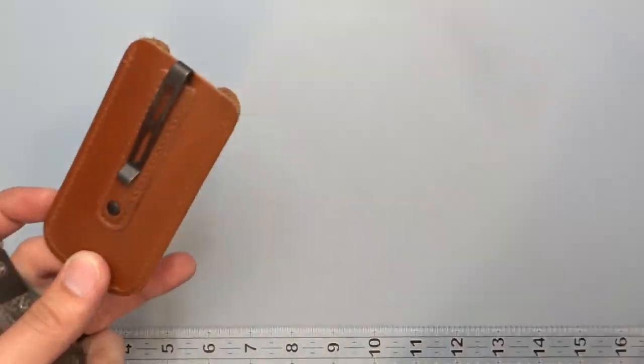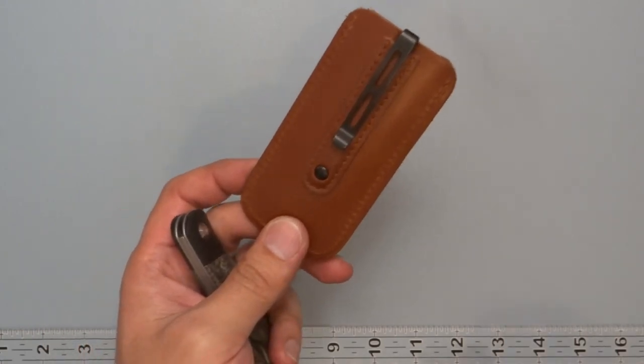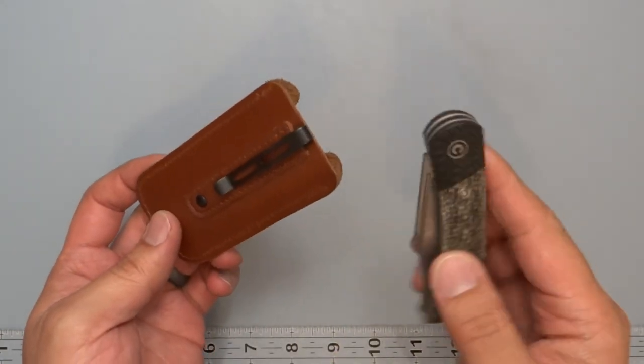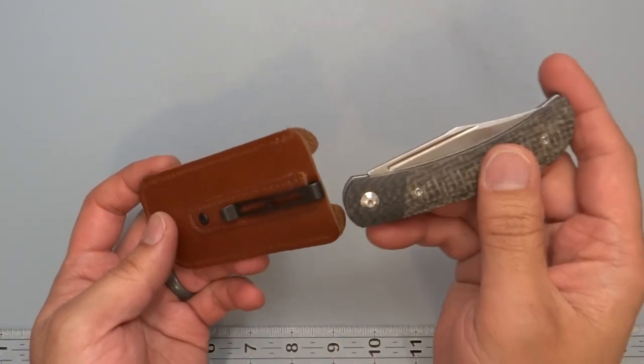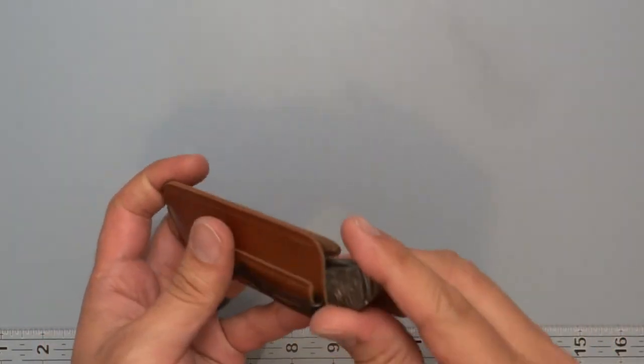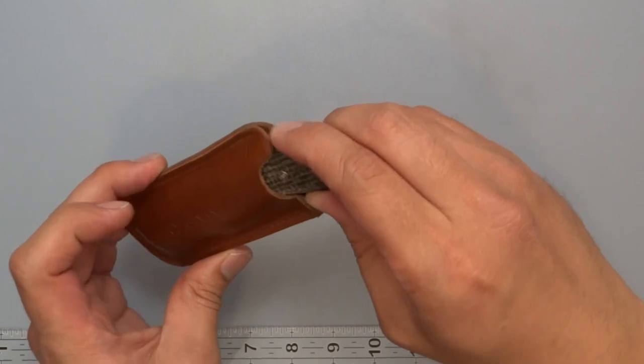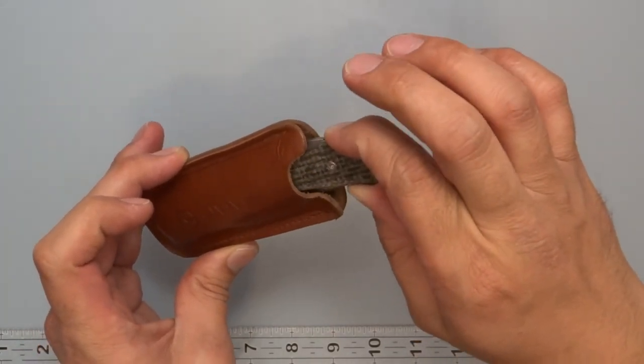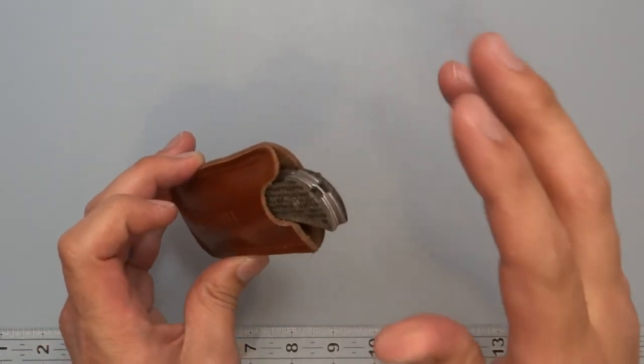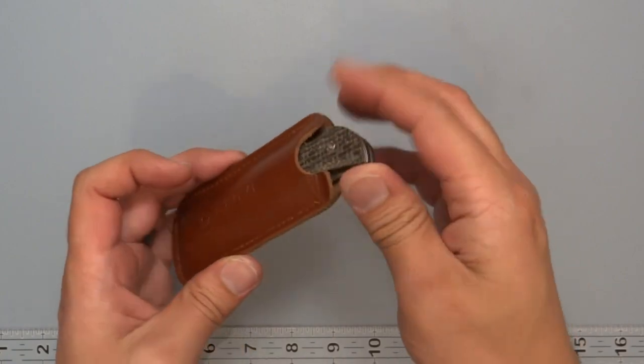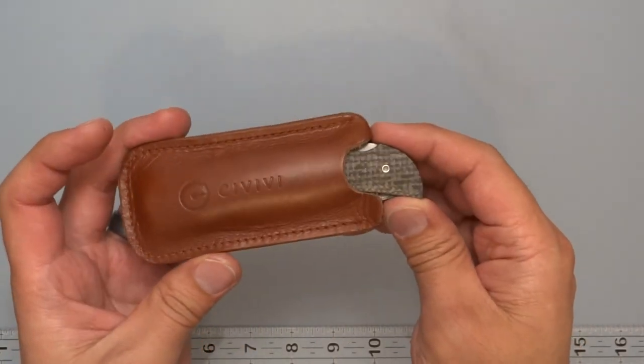And it does actually make a difference at least what I found as far as how it's going to ride in your pocket. When I was riding it at tip up carry I found that this little edge here helped to have that on the side where I'm not having my thumb to actually pull it out if I'm going to leave the sheath in my pocket. That's just what I found with it. You might find something different.